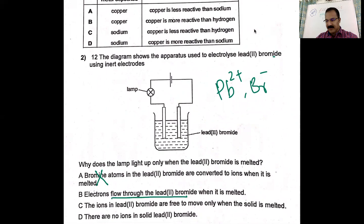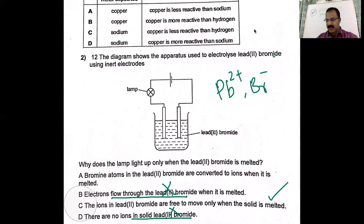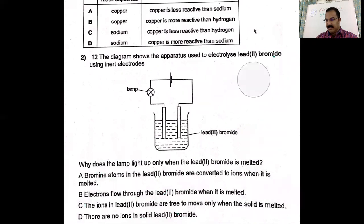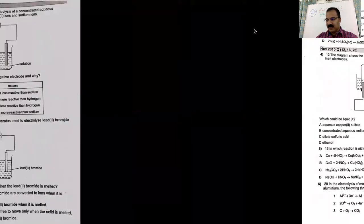Option B says electrons flow through the lead bromide — electrons do not flow through ionic compounds. Option C says the ions in lead bromide are free to move only when the solid is melted — that's correct. In solid state, ions are not free to move. Option D says there are no ions in solid lead bromide — that's also a wrong statement. So the answer is C.